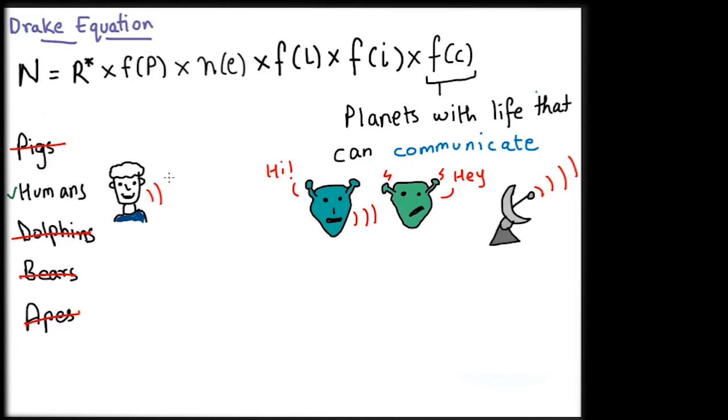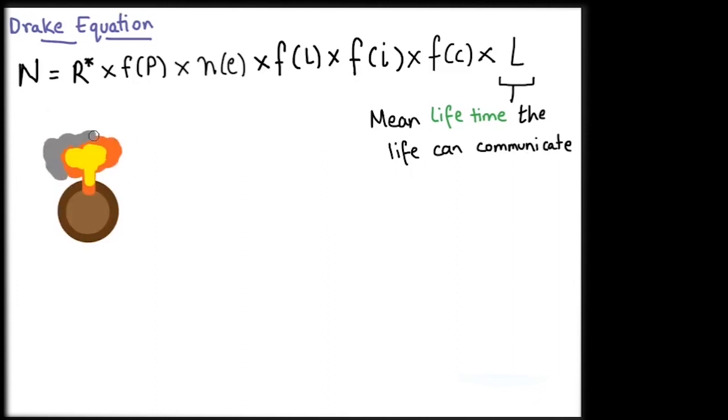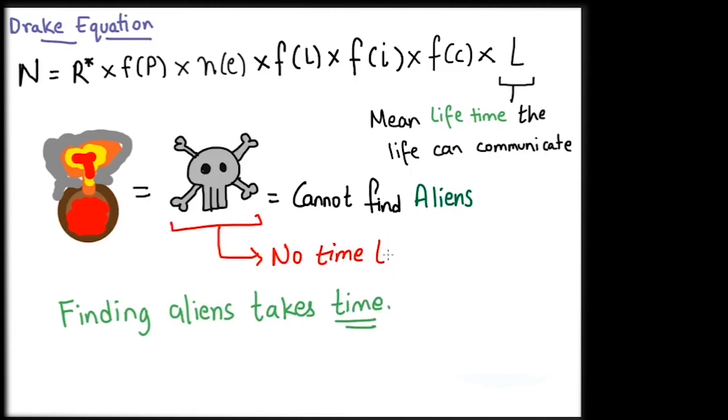Some life may be too new to develop any appreciable form of communication. The seventh and the last term is L, which is the mean length of time intelligent species can communicate. A species that dies too soon, even despite developing communication, may not be able to communicate with the other life. Detecting life in the universe outside your planet is a task that requires decades of patience, and the duration of our capability to communicate dictates this.